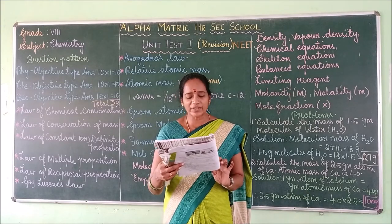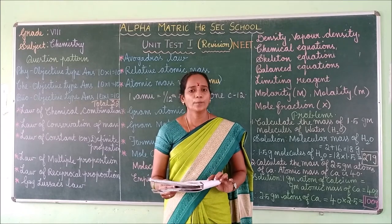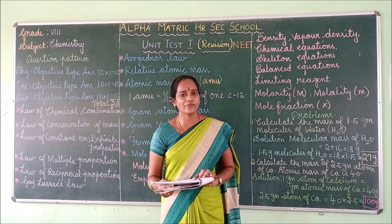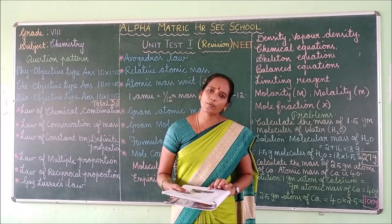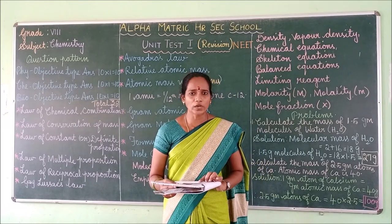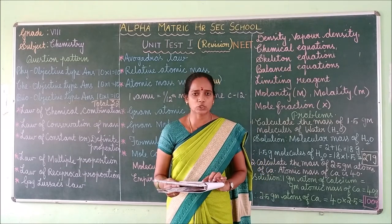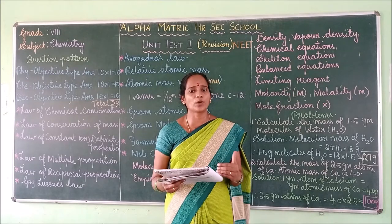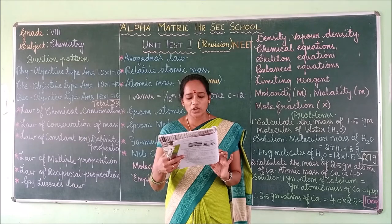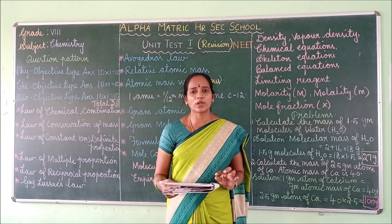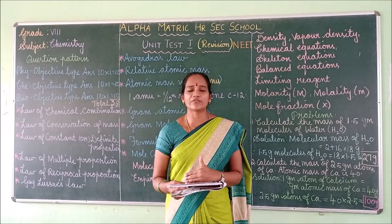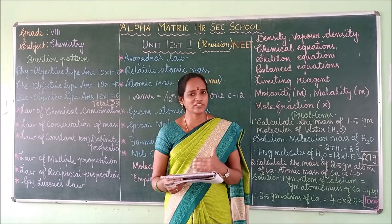For example, the first compound is butane. What is the molecular formula of butane? It is C₄H₁₀. What is the empirical formula of butane? This is the simple whole number ratio — C₄H₁₀ simplifies to C₂H₅. This is the empirical formula of butane. For octane, the molecular formula is C₈H₁₈, and its empirical formula is C₄H₉.